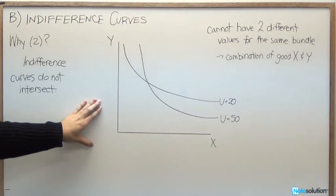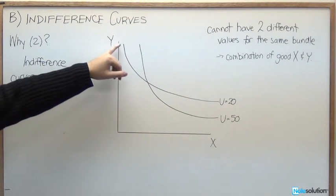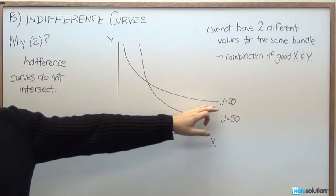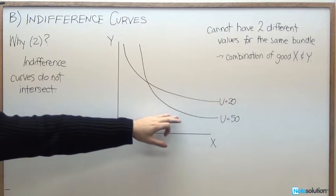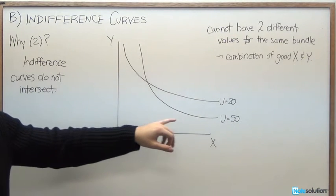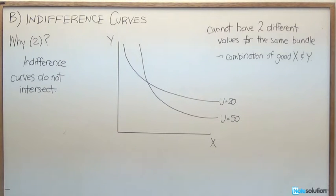We've got an example here of a bad indifference curve diagram. So what we've got is here we have one indifference curve representing a utility value of 20, and we've got another indifference curve here representing a utility value of 50. So we can clearly see that here they're actually crossing, or they're intersecting.